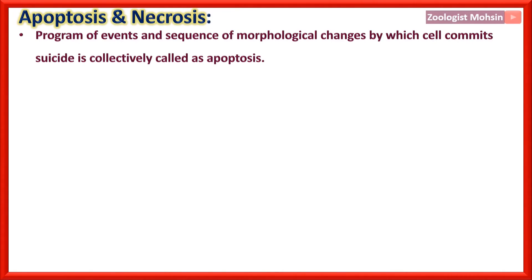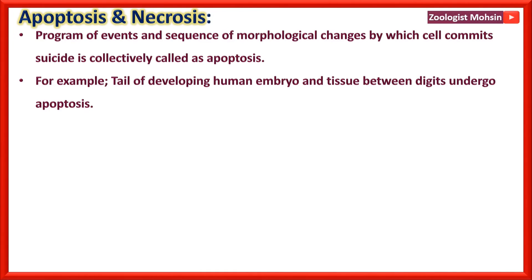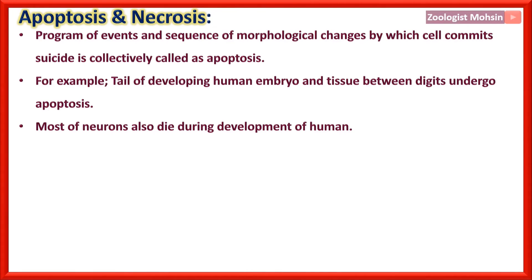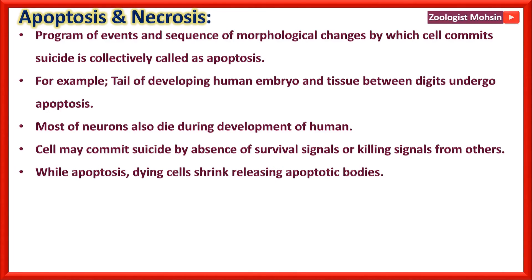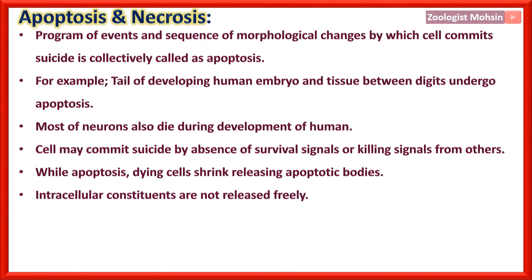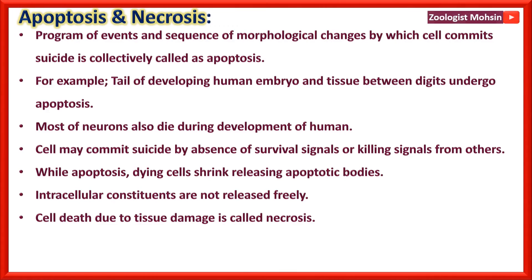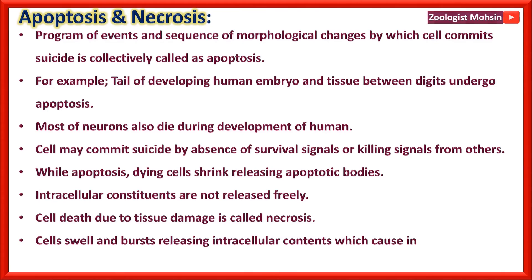Apoptosis and Necrosis. Apoptosis is a programmed sequence of morphological changes by which a cell commits suicide. For example, the tail of a developing human embryo and tissue between digits undergo apoptosis during development, and most neurons also die during human development. A cell may commit suicide by absence of survival signals or by killing signals from others. During apoptosis, dying cells shrink, releasing apoptotic bodies or blebs. Intracellular constituents are not released freely during apoptosis because if those particles were released freely, they would be dangerous.